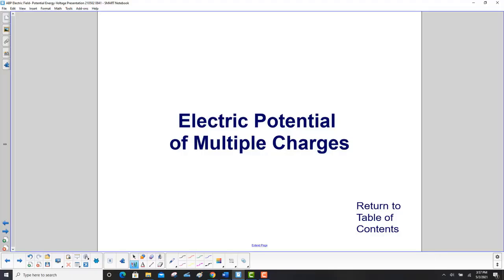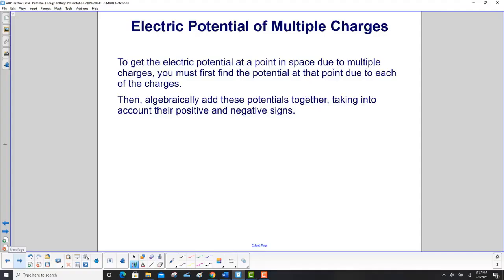Electric potential of multiple charges. To get the electric potential at a point in space due to multiple charges, you must first find the potential at that point due to each of the charges, then algebraically add those potentials together, taking into account their positive and negative signs.